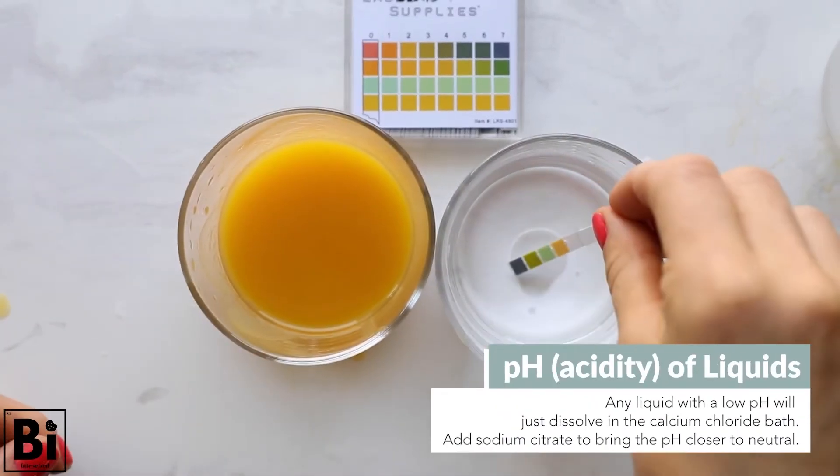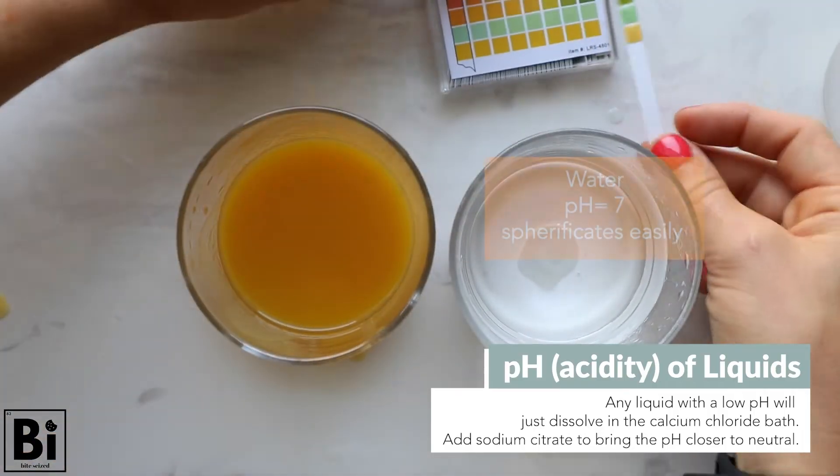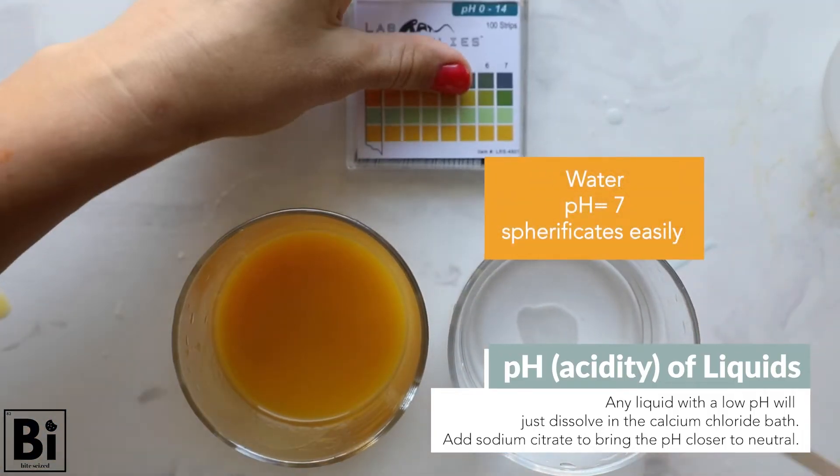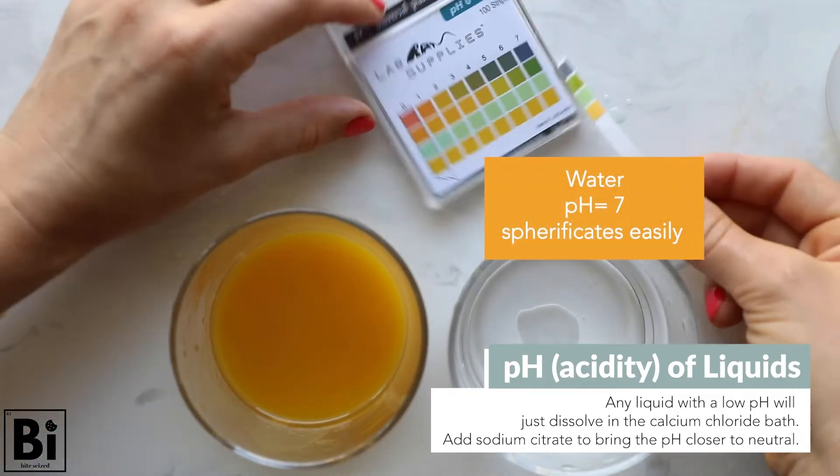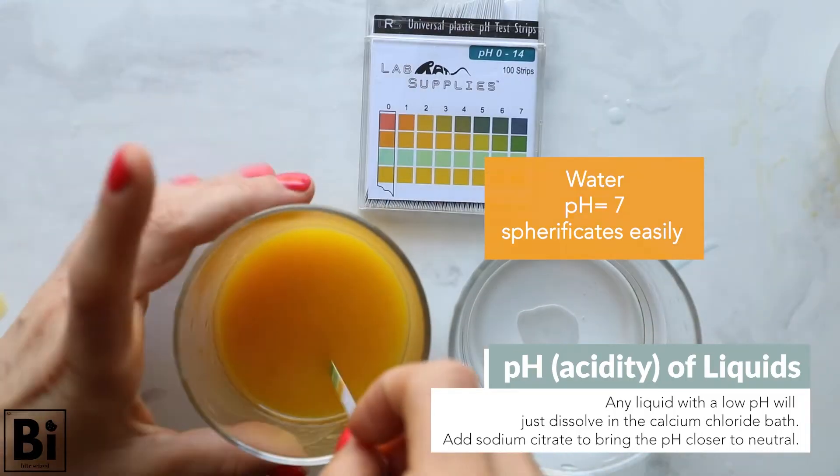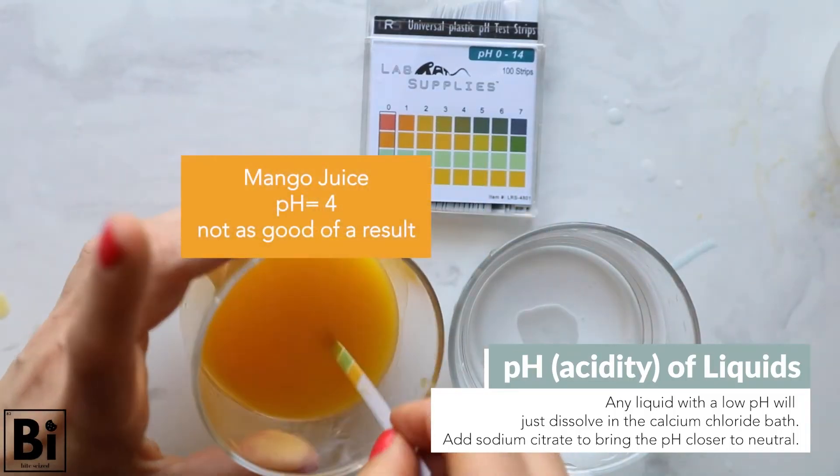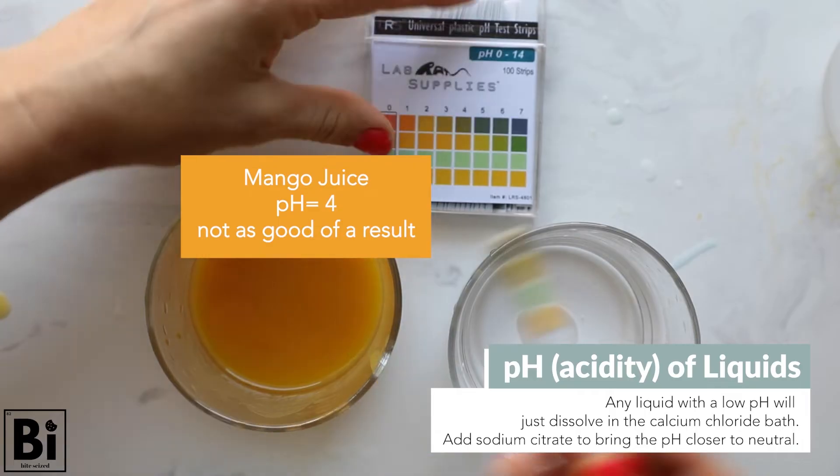If the pH is too low and acidic, it won't work very well. It needs to be closer to neutral, which is 7. A lot of fruit juices are acidic, so that's something you have to look out for. But there is a solution. You can add sodium citrate.